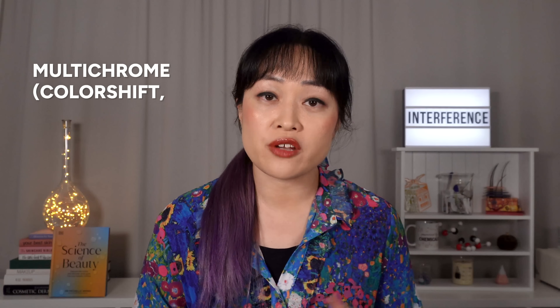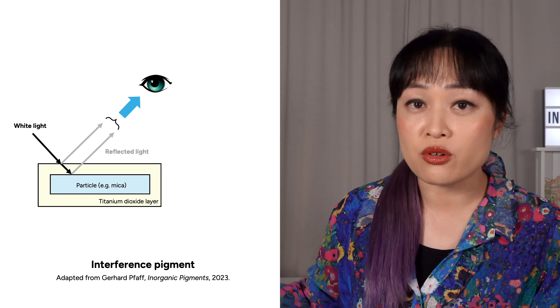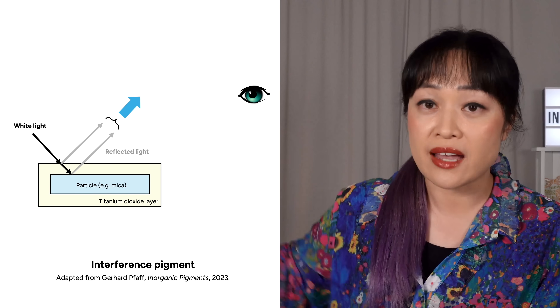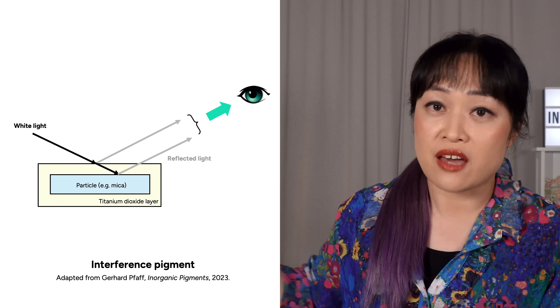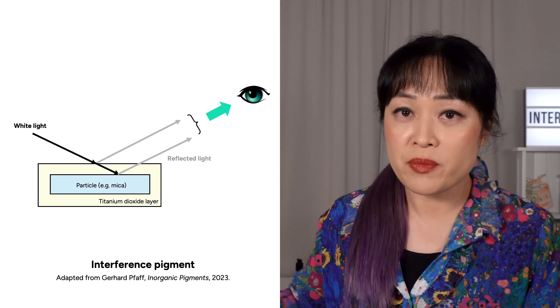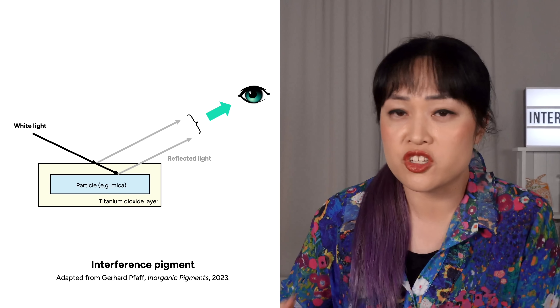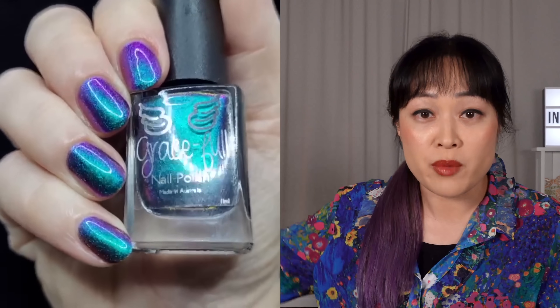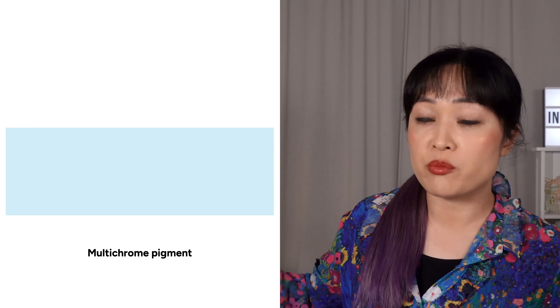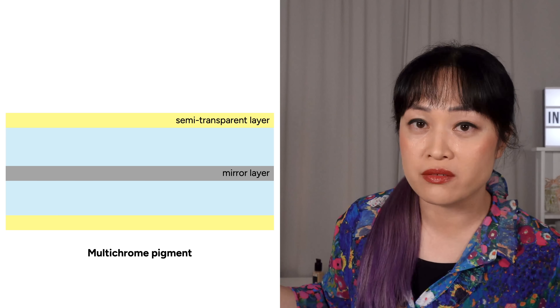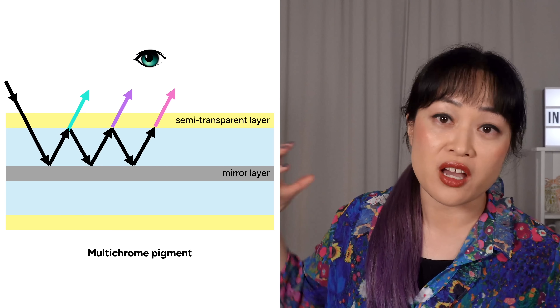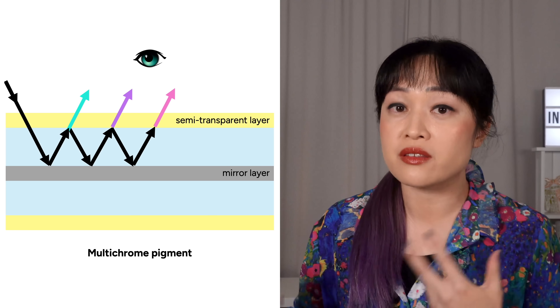Multichrome pigments are also called color shift or chameleon pigments. Back to the diagram with our pearl pigment particle: if our eye moves over here then the light would be coming in at a different angle. The bottom wave would be travelling for longer before coming back out, so it's like the film is effectively thicker. The waves would be out of sync by a different amount, which means a different color. With pearl pigments the color changes depending on the viewing angle, but the change isn't that big. If we want a bigger change in color we need the light to be more out of sync — to travel for much longer. The answer is mirrors. In the middle of a multichrome pigment we have a piece of aluminum that acts as a mirror and a layer of translucent chromium on the outside that acts as a two-way mirror. The light bounces back and forth inside the middle layer before hitting your eye, so when you change the viewing angle by a little bit the color changes a lot.